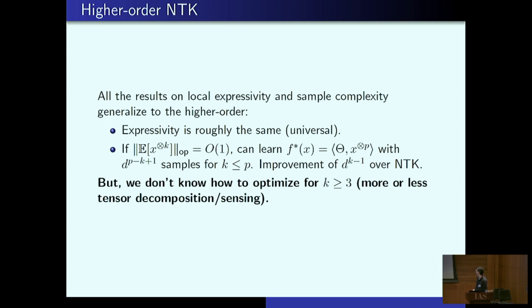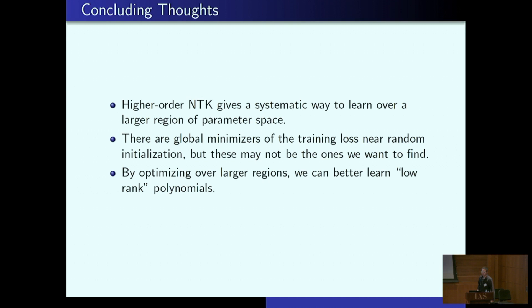Yes, okay, wow, I'm finishing early. Okay, some concluding thoughts. So using these higher order terms on the NTK gives us a systematic way to learn over larger regions of the parameter space. In contrast to a lot of these results on training the linear NTK, what linear NTK basically tells you is that there's global minimizers everywhere when you're over parameterized, in particular really close to where you start, but they may not be the ones we want to find. And then optimizing over larger regions, at least for certain target functions, you can do better, like these low rank polynomials are one example. And that's all.